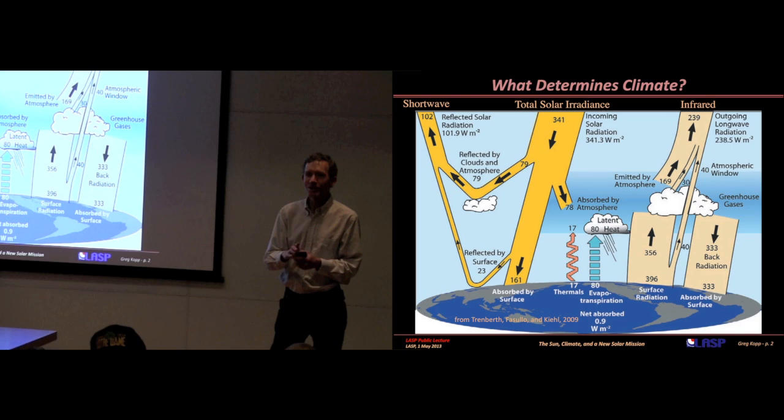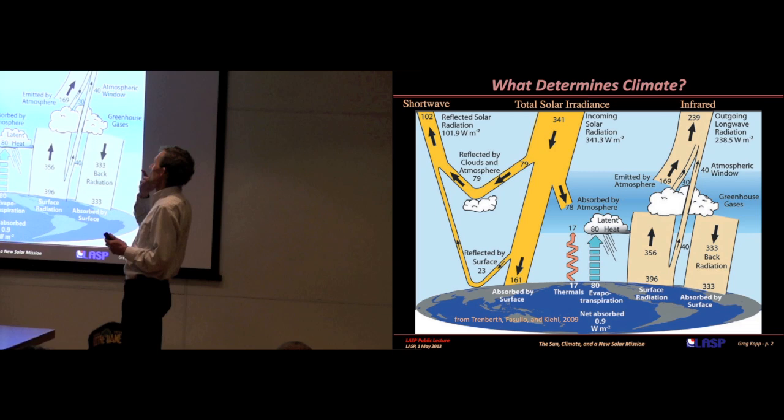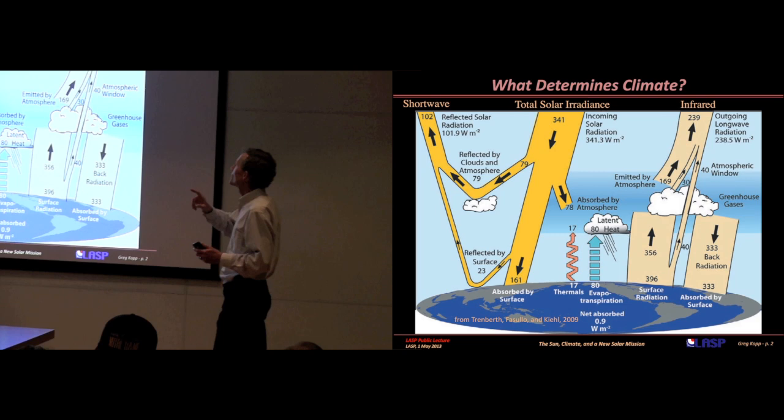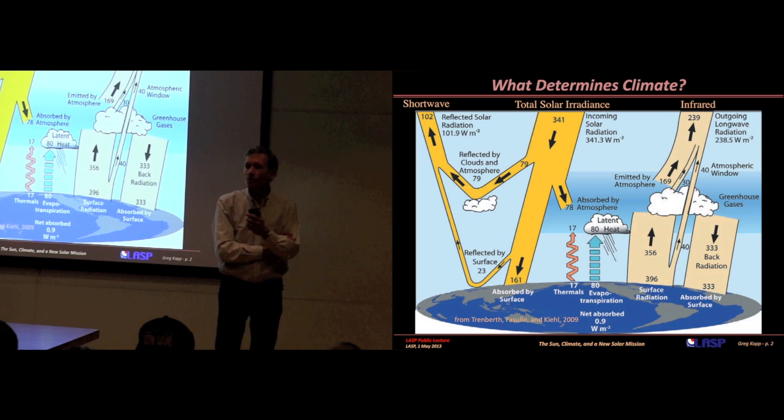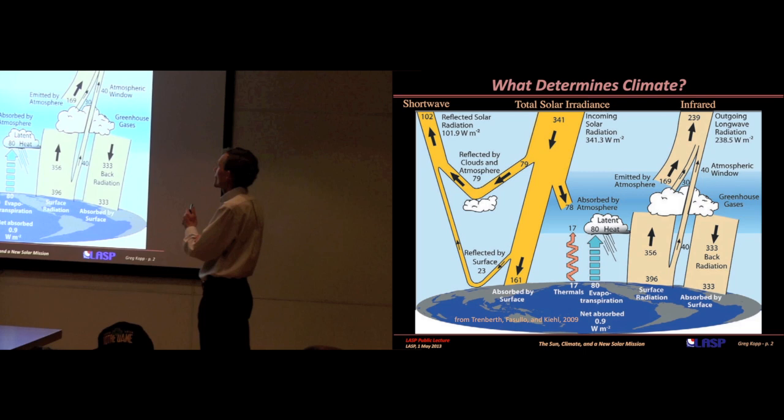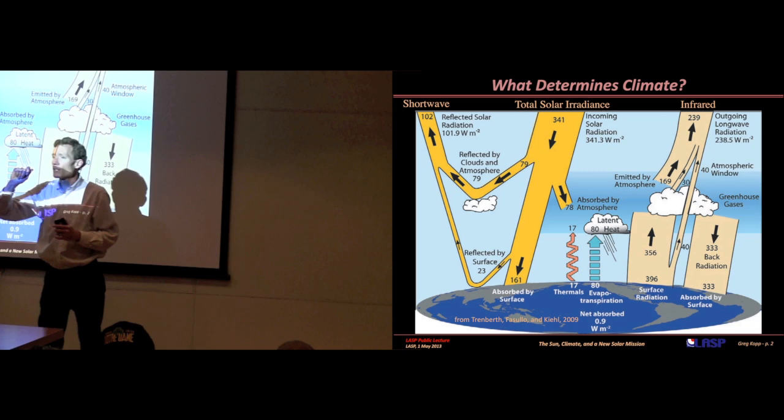Let's talk about our climate. What really drives our climate system? At a high level, this is it. This is what determines the temperature of the Earth. It's the incoming solar energy shown here in the center, total solar irradiance. All the different wavelengths from the sun coming into the top of our atmosphere. That light comes down, and about a third of it gets reflected.